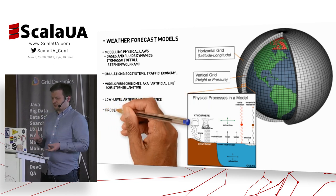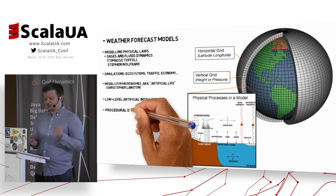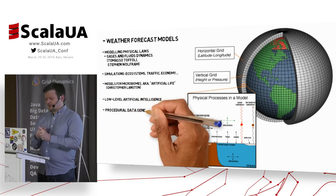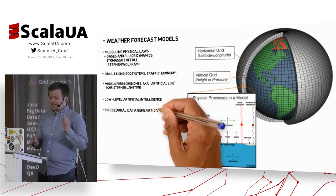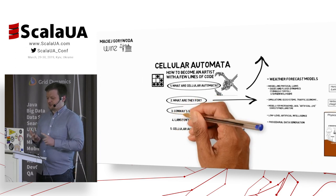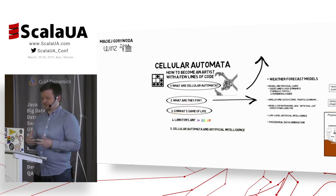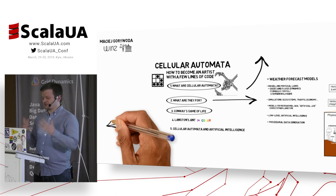It's how microbes are fighting for resources and multiply. And also automata can be used for low-level artificial intelligence, which I will talk about in a few minutes, and for procedural data generation, which is something like creating pictures out of nothing.